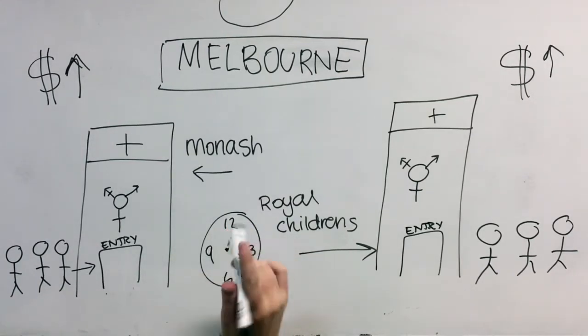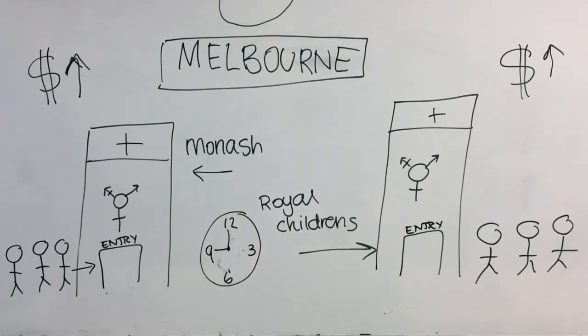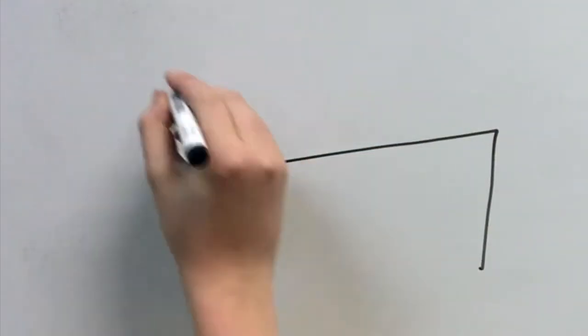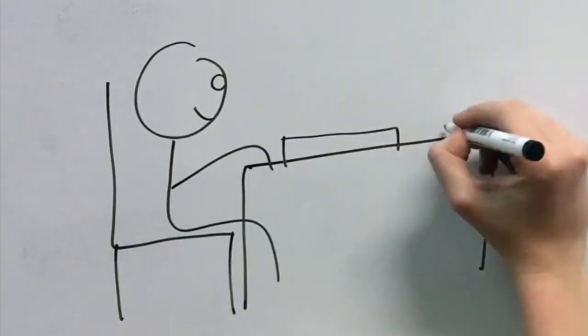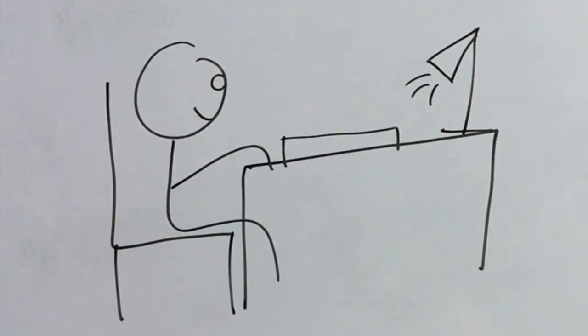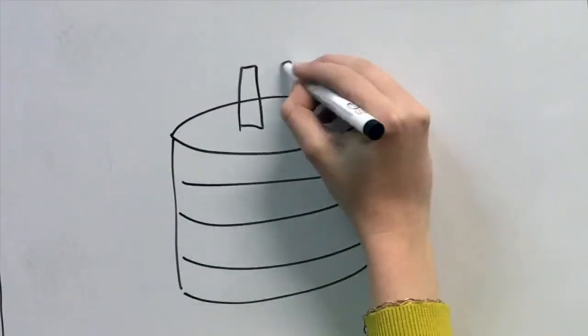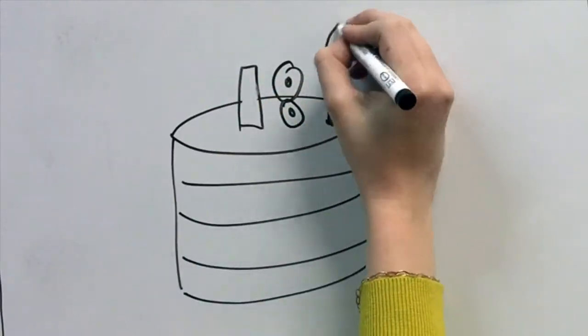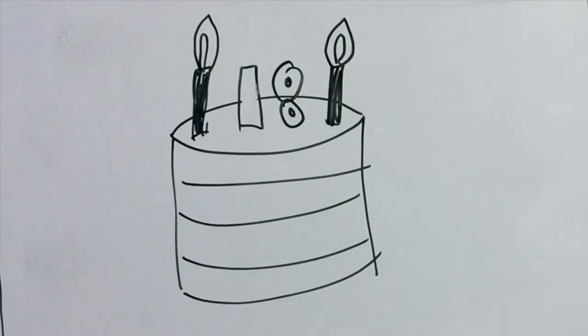However, when we consider that some patients are waiting up to 18 months, will the sole increase in counselors be sufficient? Another possible solution will be to enroll the assistance of general practitioners. By training GPs to perform competent psychological assessments, we can divert the traffic of patients away from the transgender health facilities. By having GPs trained to approve treatment, we allow clinical psychologists to focus on psychological counseling of those who truly need it.